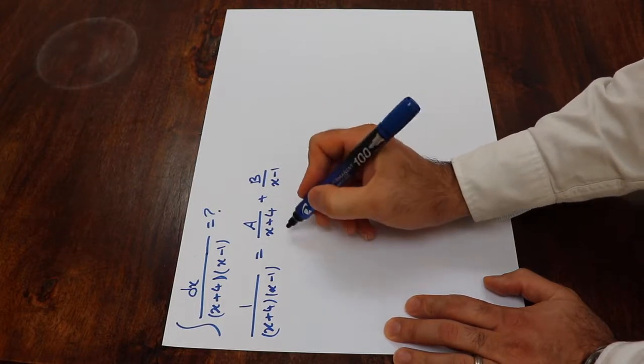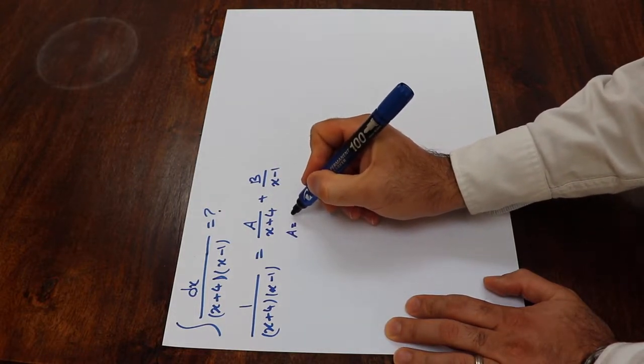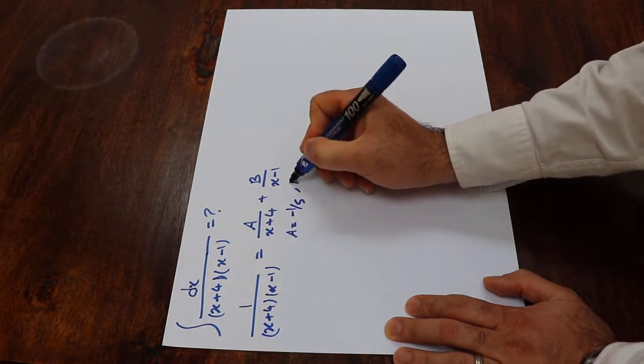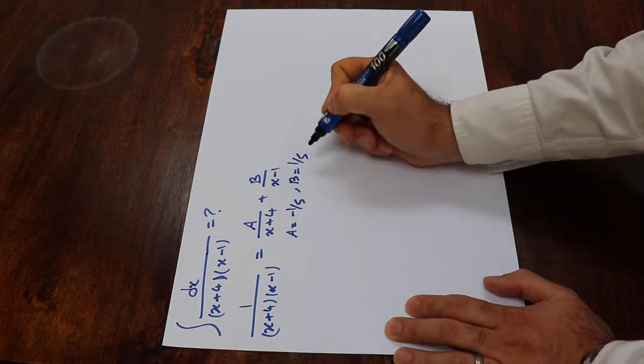So here if you do the algebra, you get a will be equal to minus 1 divided by 5 and b will be equal to 1 divided by 5.